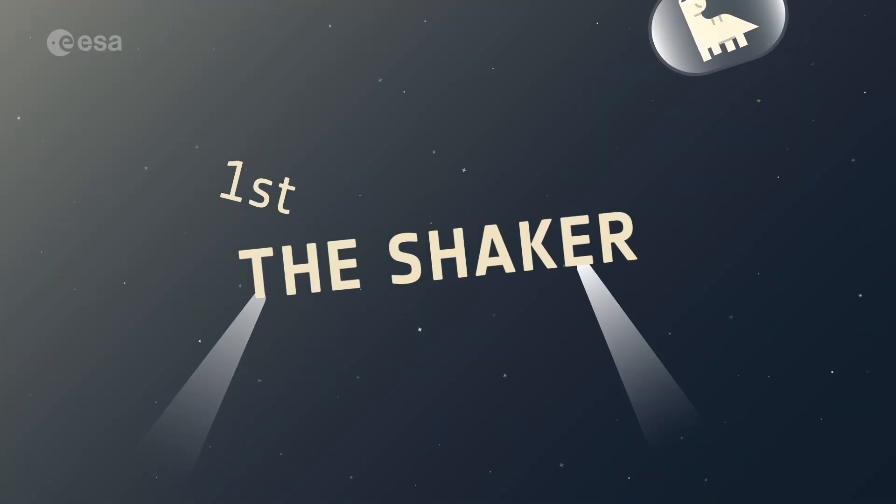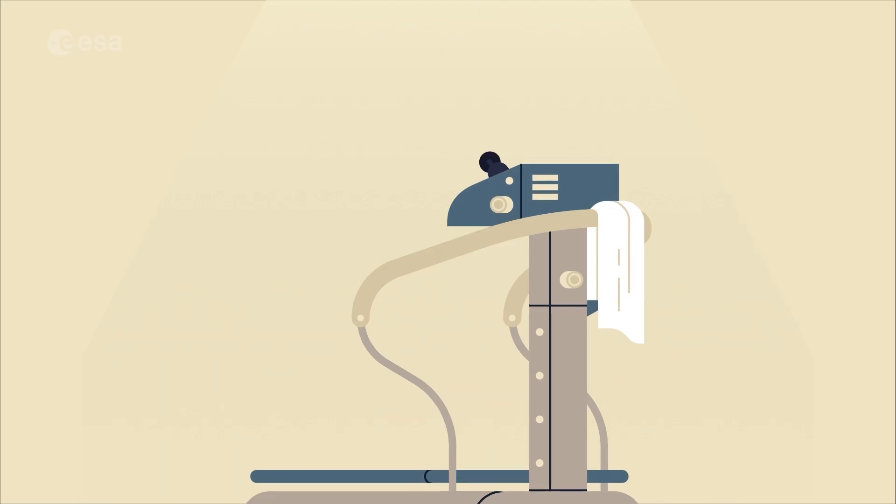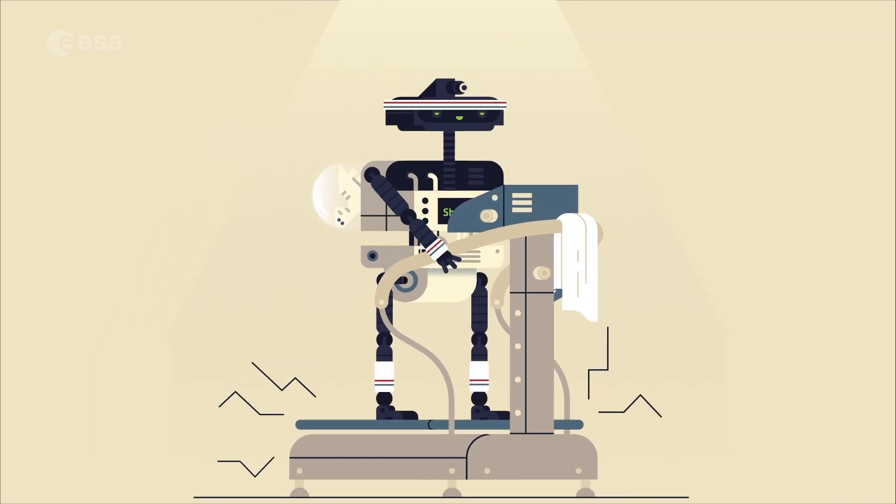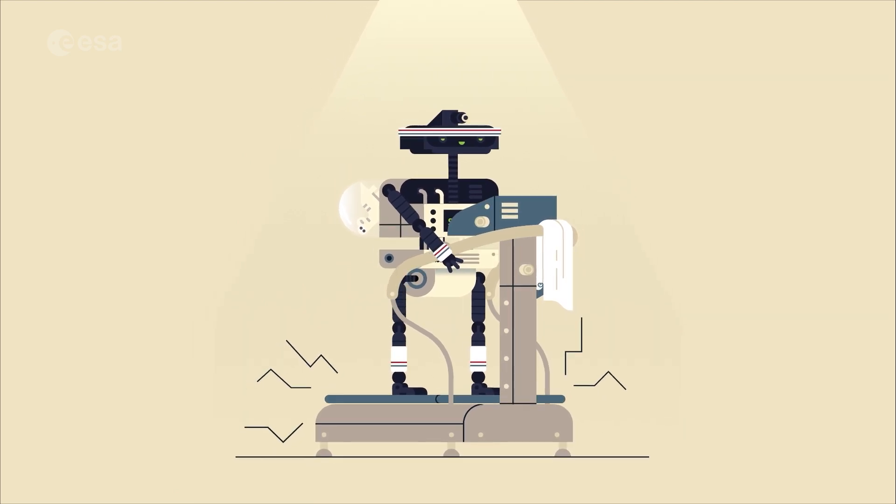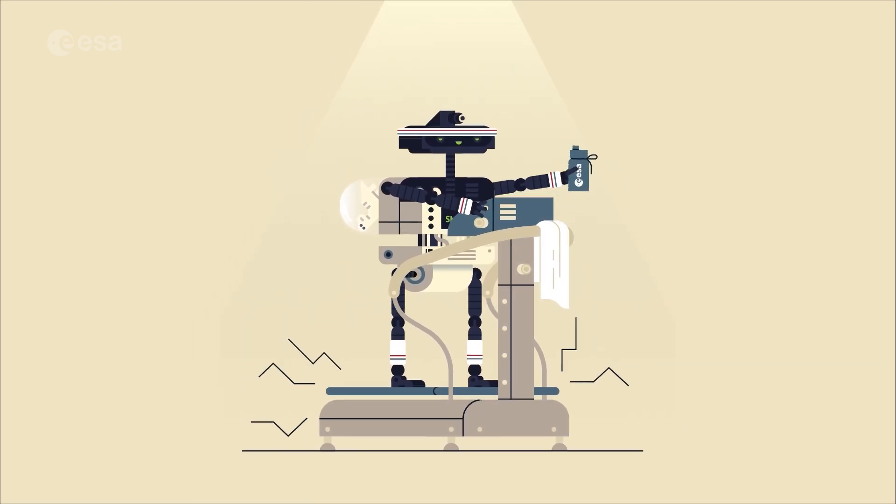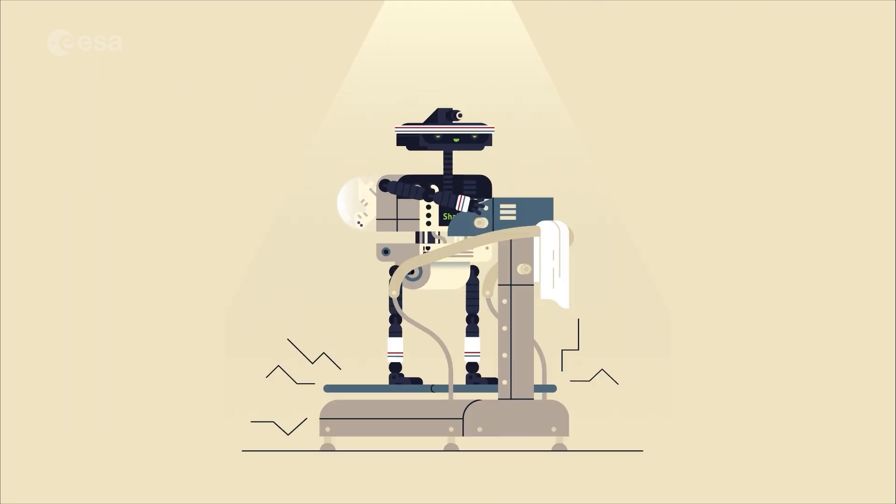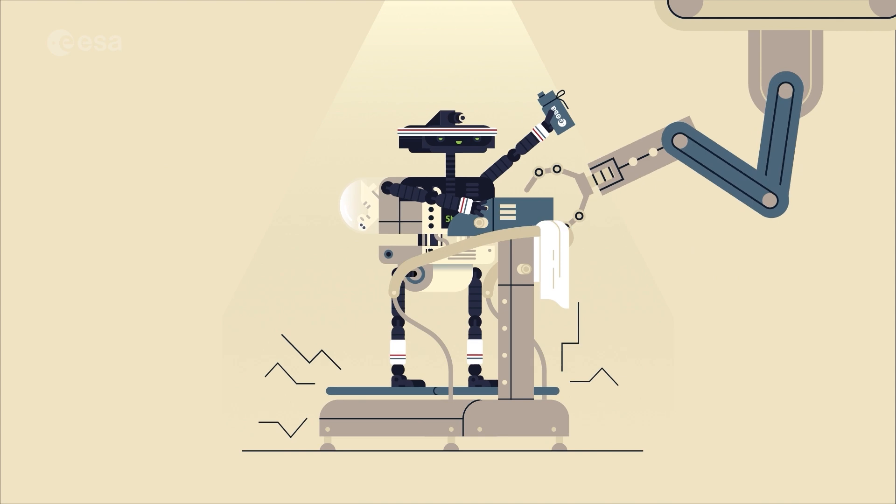First up, the shaker. HERA will be loaded onto a vibration table and shaken intensely in all directions, reproducing the stresses she'll experience when launched into space. HERA will then be shaken through a range of frequencies to check that nothing oscillates too much.